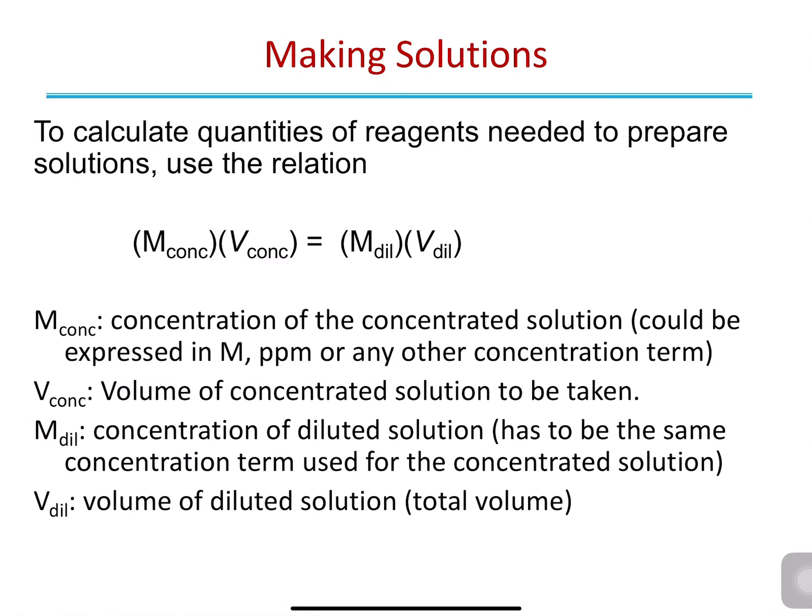Making solutions is an important thing to learn in this module, especially in your practicals where you will have to make many different solutions with specific concentrations. You will have a stock solution with a concentrated solution of a certain concentration, and then you will be asked to make a serial dilution and prepare other solutions of much lower concentration. So how can you use that stock solution and calculate the concentration of the smaller concentrated solutions?